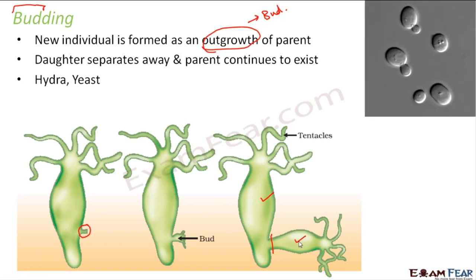Budding is also seen in yeast. Looking at a yeast cell, there is a small outgrowth on it which will mature and separate from the yeast. Sometimes the outgrowth becomes quite mature and before it detaches from the parent organism, another outgrowth appears on that outgrowth as well — so by the time it detaches from the parent body it itself already has an outgrowth on its body. This process is known as budding.